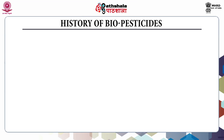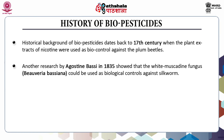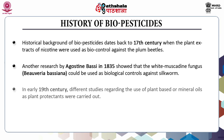Coming to the historical background of biopesticides, it dates back to the 17th century when plant extracts of nicotine were used as biocontrol against plum beetles. Another research by Agustin Bessy in 1835 showed that the white muscadine fungus, Beauveria bassiana, could be used as biological control against silkworm. In the early 19th century, different studies regarding the use of plant waste or mineral oils as plant protectants were carried out.